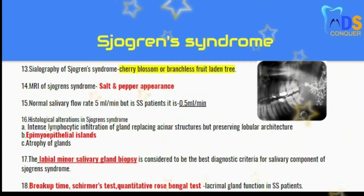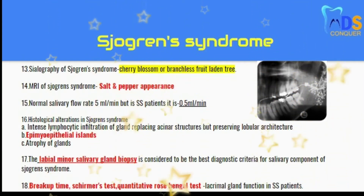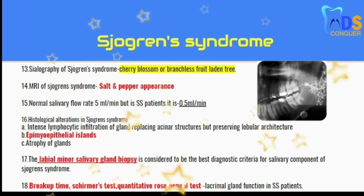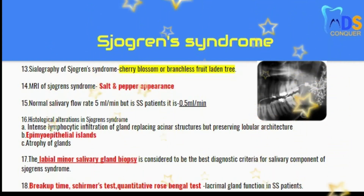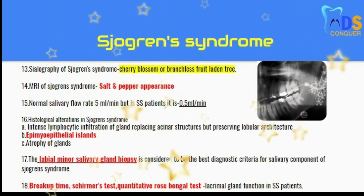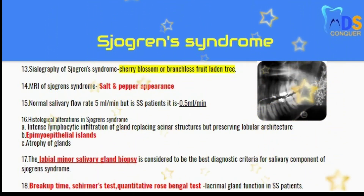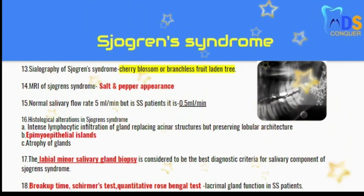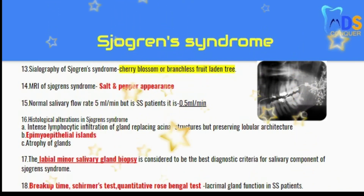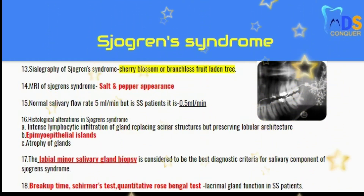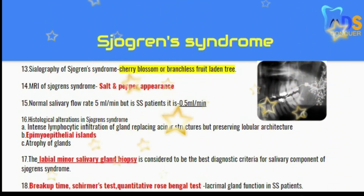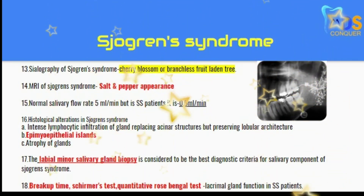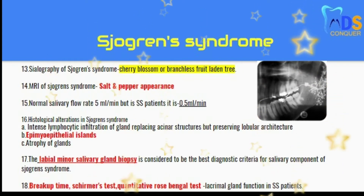Moving on to Sjögren's syndrome. Point 13: sialography of Sjögren's syndrome shows a cherry blossom or branchless fruit-laden tree appearance. Point 14: MRI of Sjögren's syndrome shows a salt and pepper appearance.